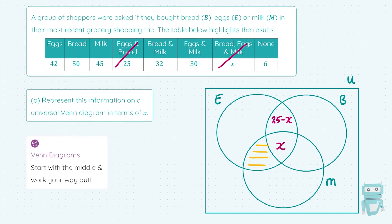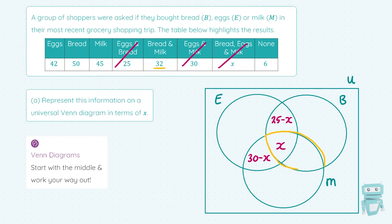Moving to eggs and milk: from the table, 30 people bought eggs and milk, so that entire intersection adds up to 30. With X already in the middle, the eggs and milk only region is 30 minus X. For the last two-way intersection, bread and milk: 32 people bought bread and milk, so the whole bread and milk intersection adds up to 32. With X already in the middle, the bread and milk only region is 32 minus X.